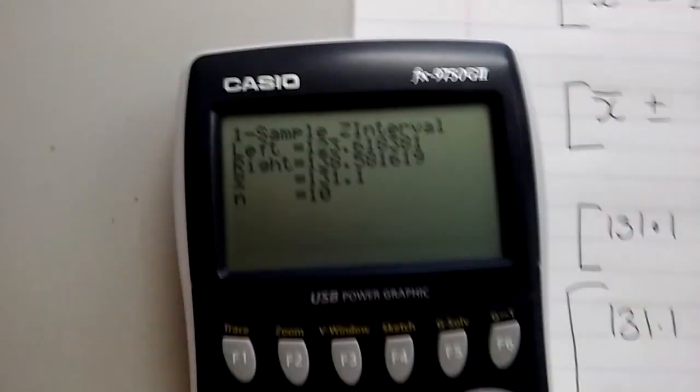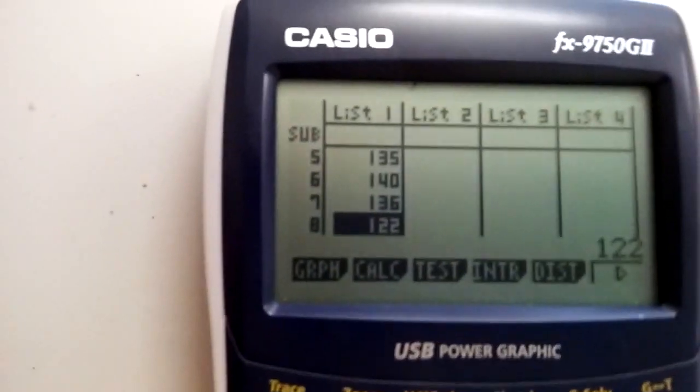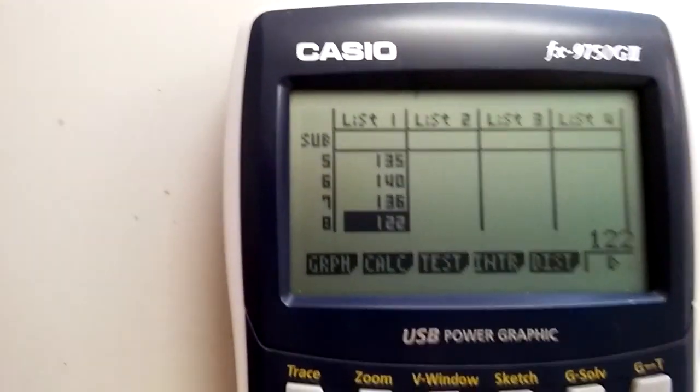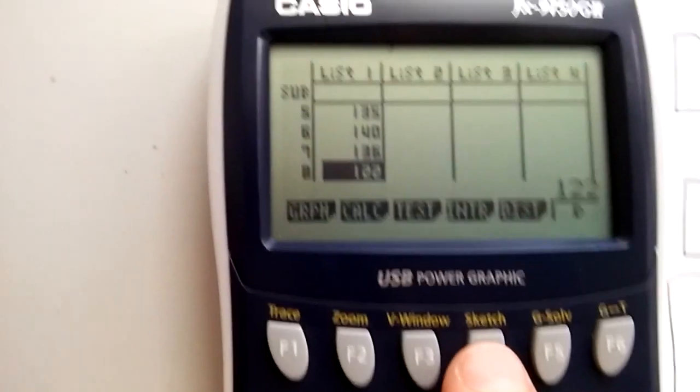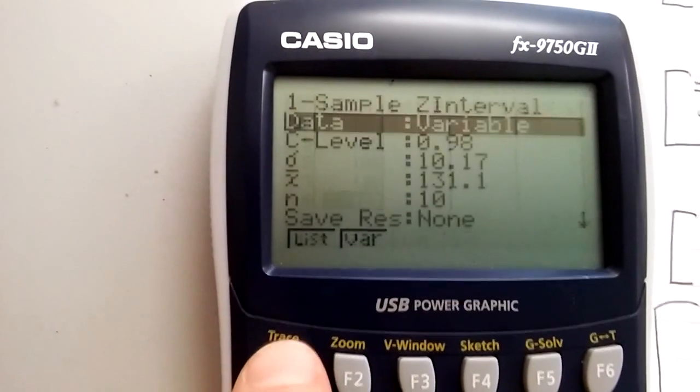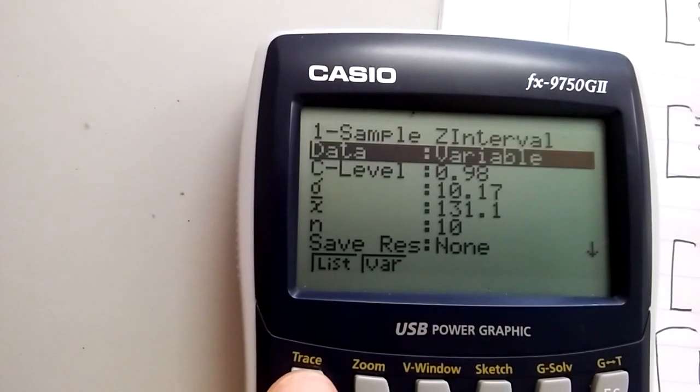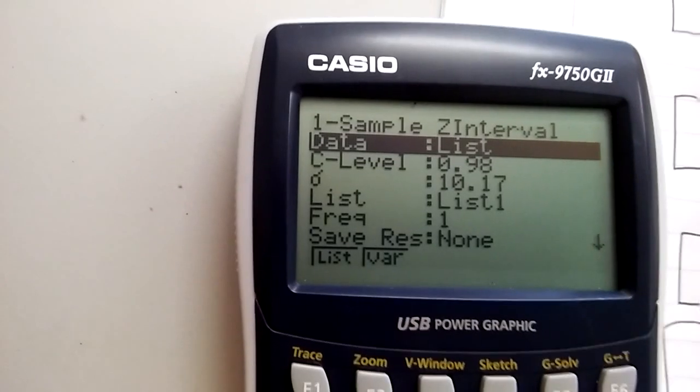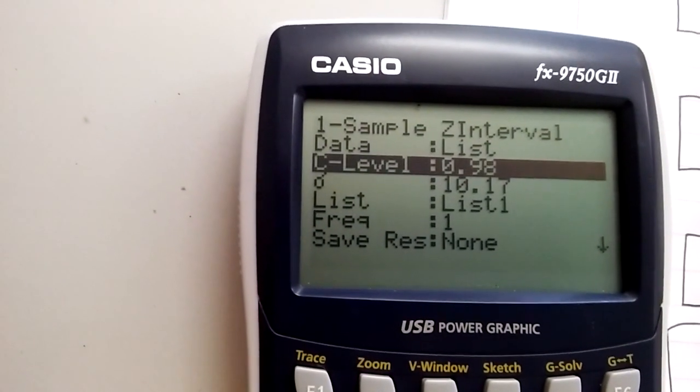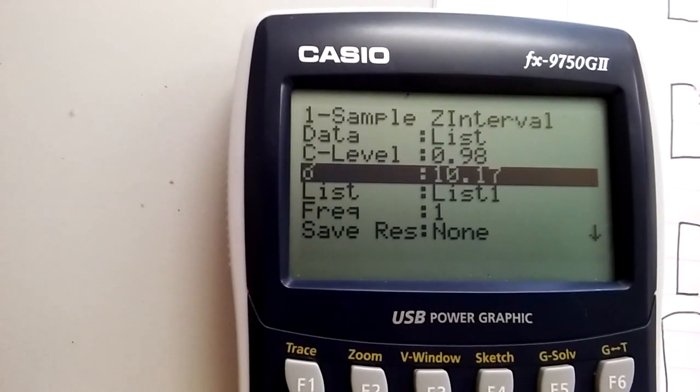Another thing just to point out on the calculator, if we exit that a couple of times, because our numbers are in a list, we can do it a slight different way. So you can go back to interval. You can say it's Z. Say we've one sample. But here when it says the data is a variable, you can tell it the data is in the list. So the data is there in the list. Confidence interval 0.98.